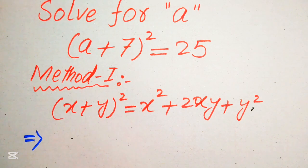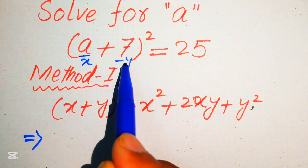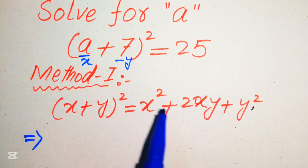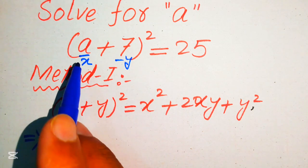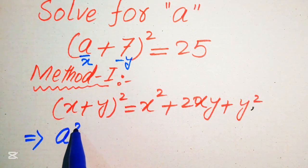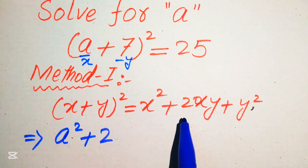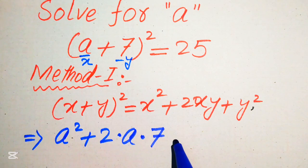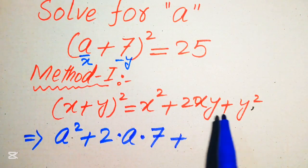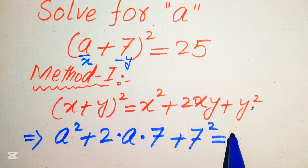We apply this formula to the left-hand side of the equation. Here, x = a and y = 7. So we expand to get: a² + 2(a)(7) + 7² = 25.